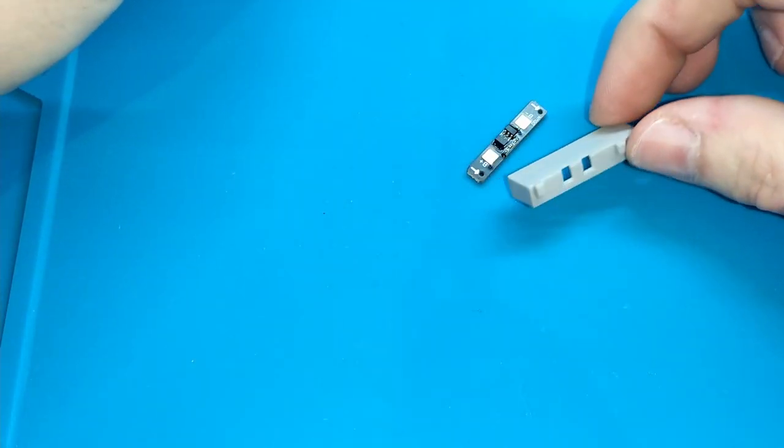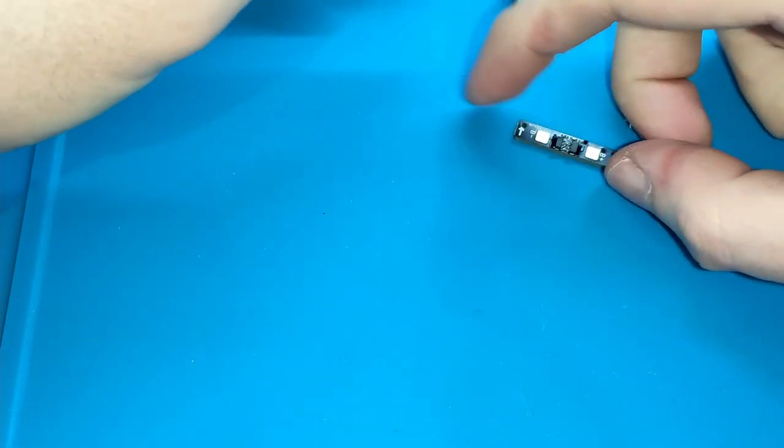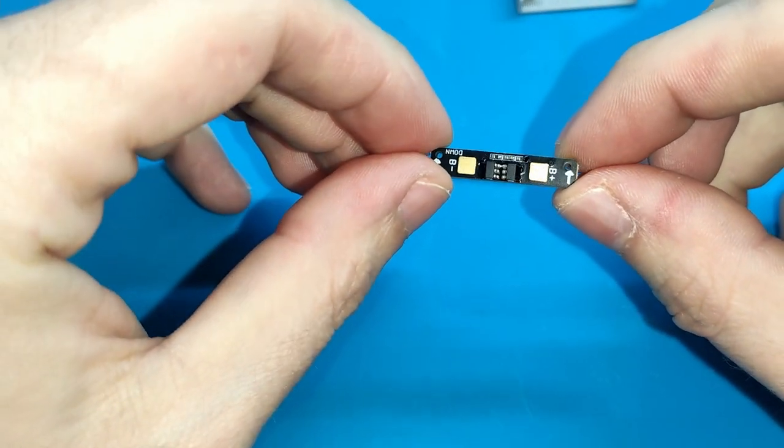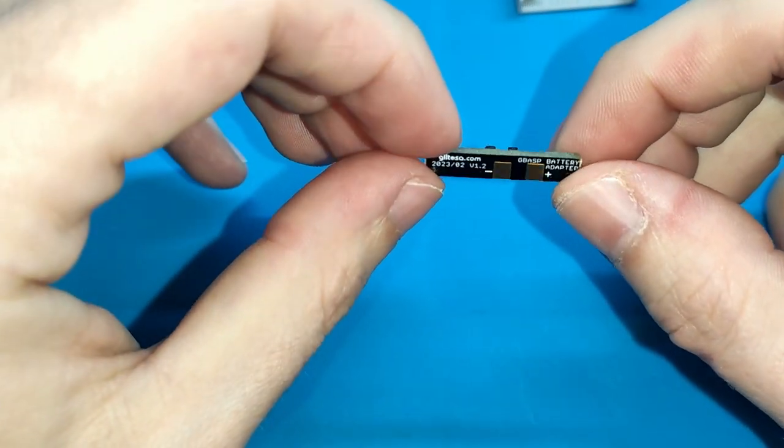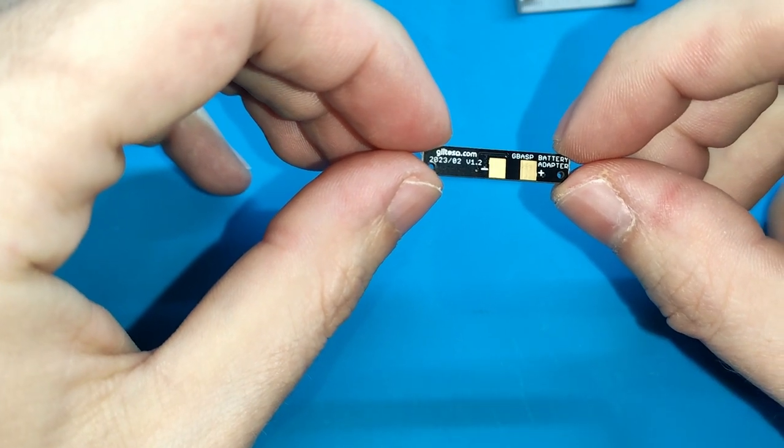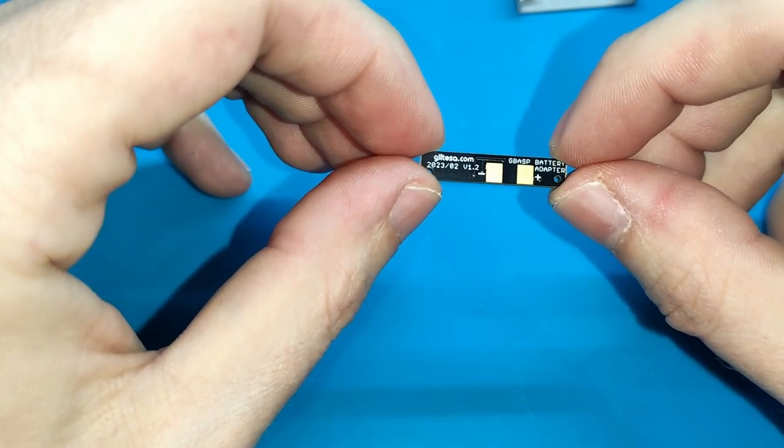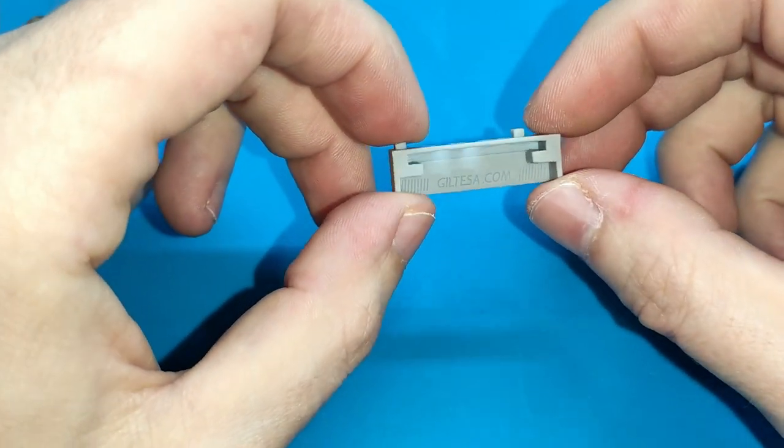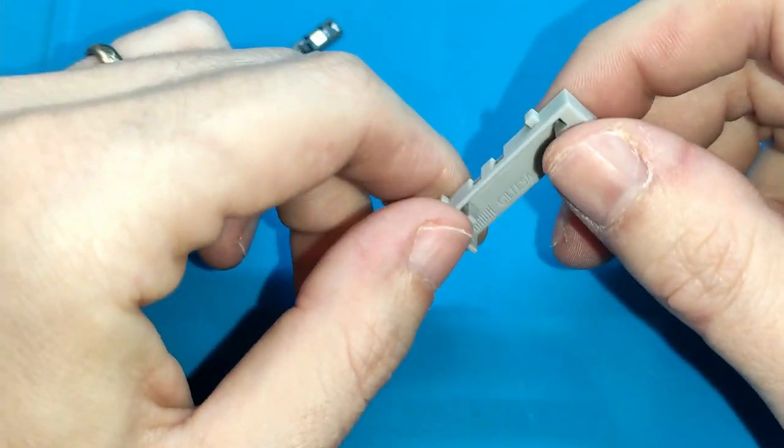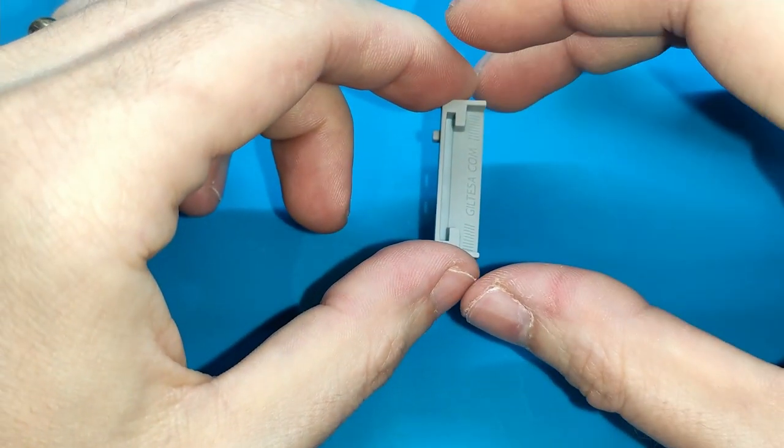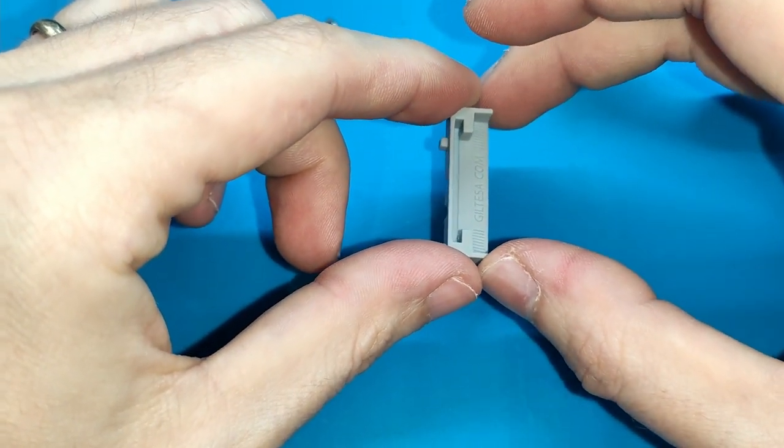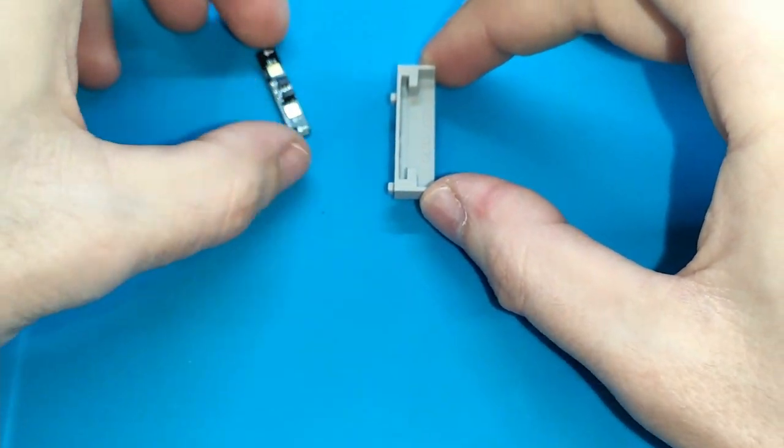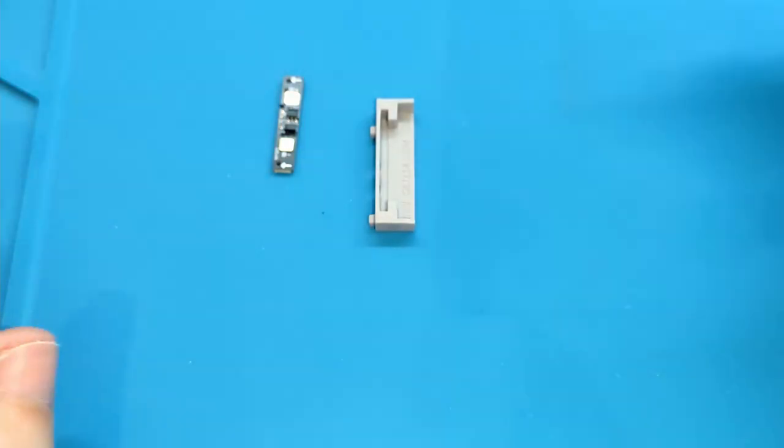The kit includes two things. The board that will allow us to connect a lithium ion battery to the Gameboy Advance SP, and a 3D plastic part to connect the battery in place. These are the two things that include the kit, but we also need a battery.